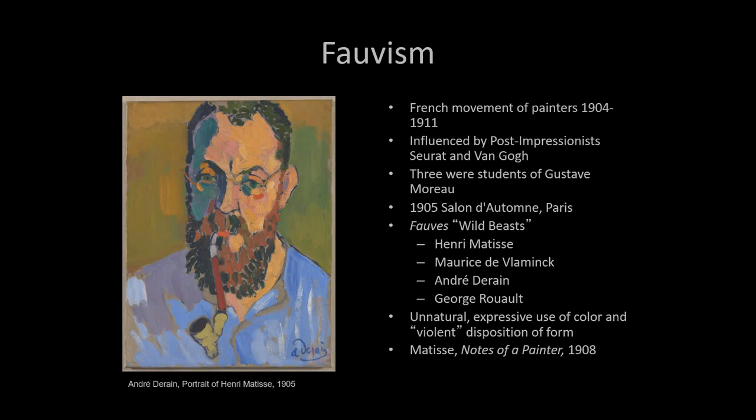Fauvism is named because they painted in a wild style with violent form and arbitrary color. A critic came by and there was a classical statue in the middle of the gallery. He said, 'This is a Donatello amidst the wild beasts,' referring to all these Fauvist painters. That's where we get the word Fauve — it just means wild beast. Almost all of these artists came out of the studio of Gustave Moreau.